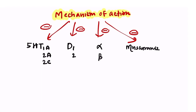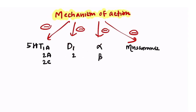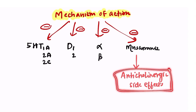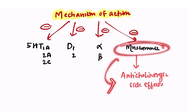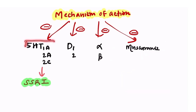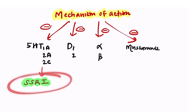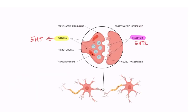Paroxetine blocks four types of receptors: 5-HT1A, 2A, 2C, dopamine D1 and D2, alpha and beta receptors, and muscarinic receptors. The side effects of paroxetine are mostly due to blockage of the muscarinic receptor, which leads to anticholinergic side effects. The main action of paroxetine is blocking the 5-HT1A, 2A, and 2C receptors, which is why it is known as a selective serotonin reuptake inhibitor.